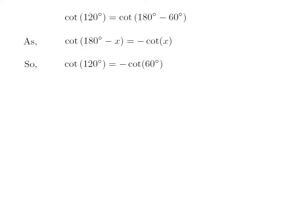Let us apply the above identity for cotangent of 120 degrees. Here, x is 60 degrees, so cotangent of 120 degrees is equal to minus cotangent of 60 degrees.